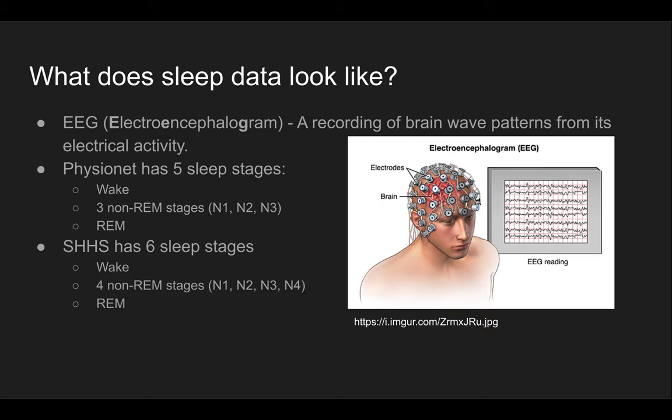So how does sleep data look? Well, sleep data is recorded using EEGs — electroencephalograms — which are basically recordings of brainwave patterns judged from electrical signals. EEG values are composed of multiple brain waves that combine to form that one EEG signal. There are waves like alpha waves, beta waves, and so on and so forth.